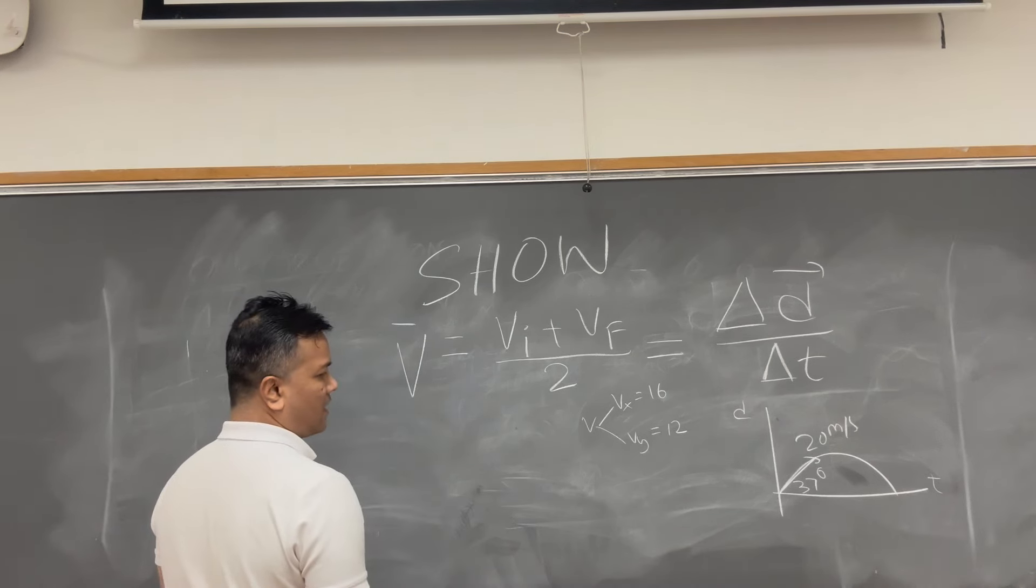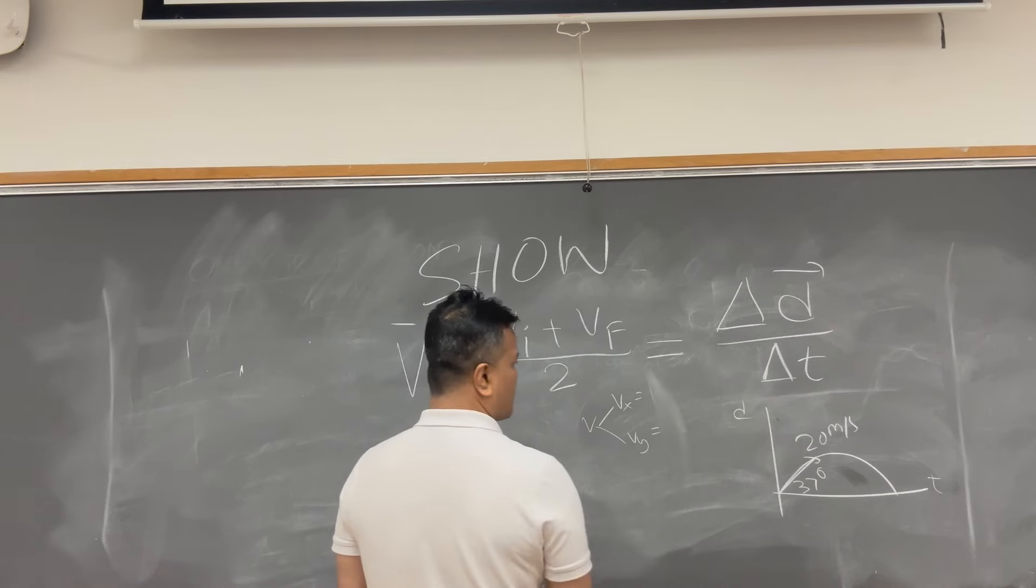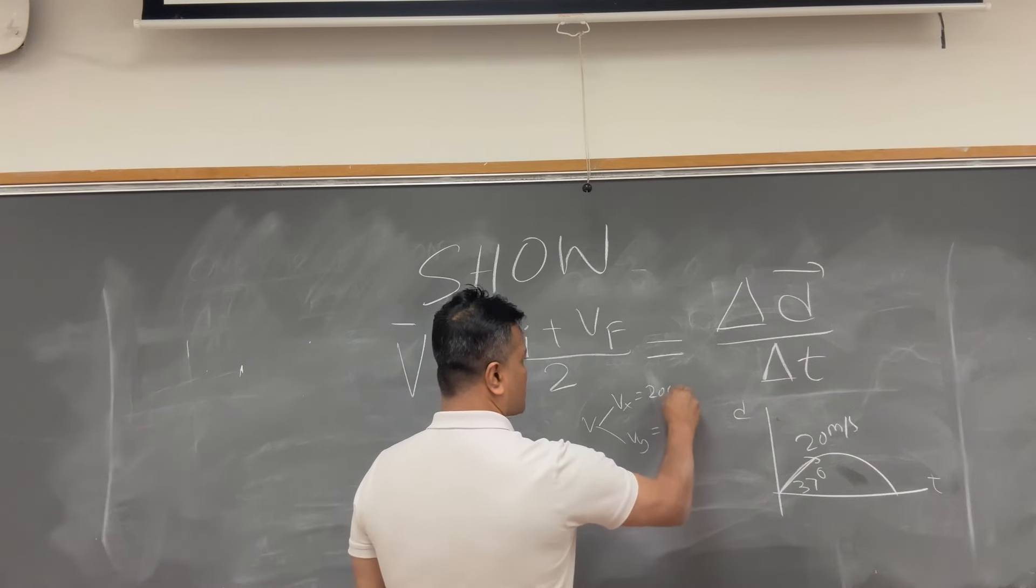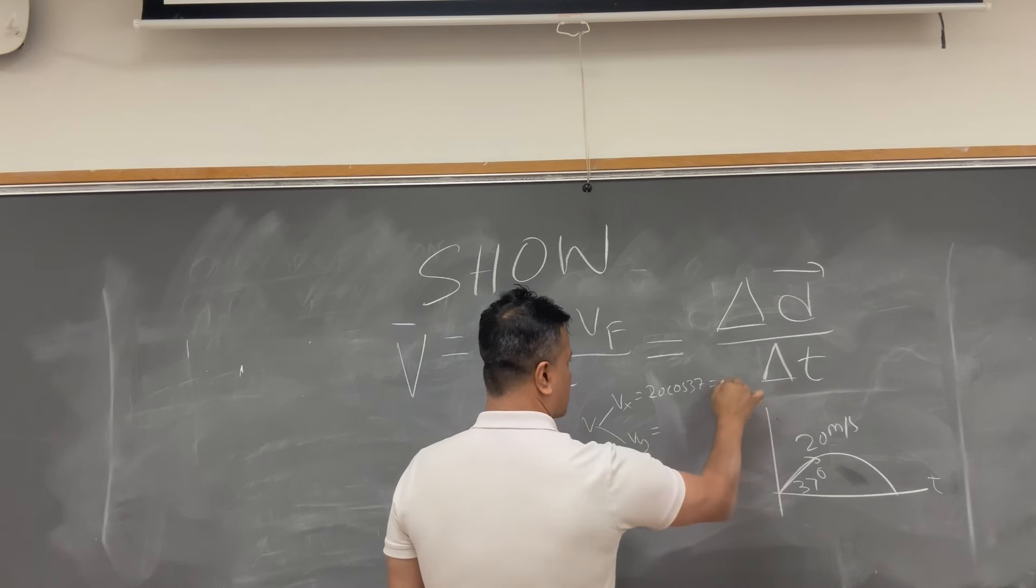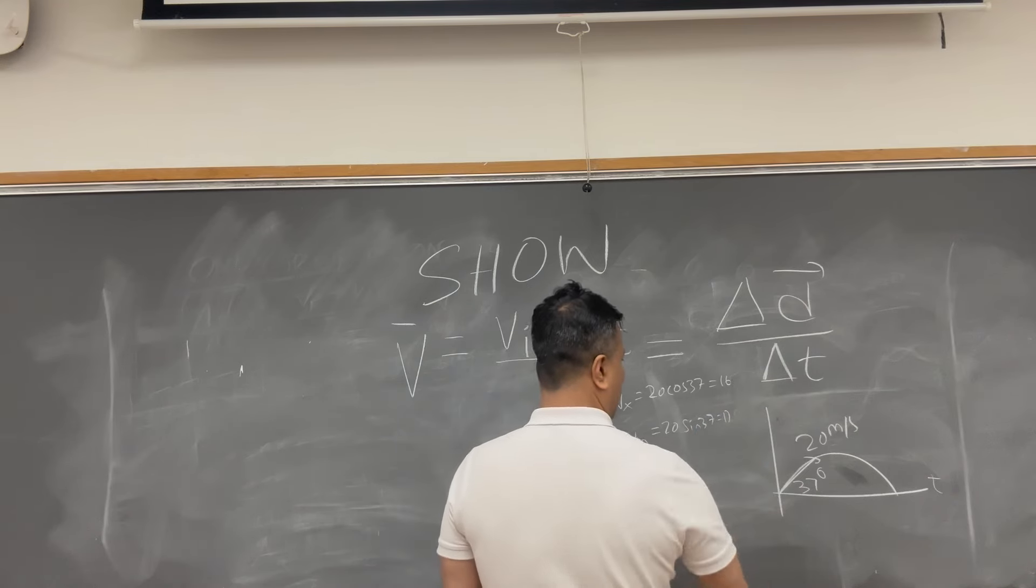And then from here, what are you going to do? How did I get 16? So, 20 cosine 37 is 16, and 20 sine 37 which is 12. So, this is how I got it.